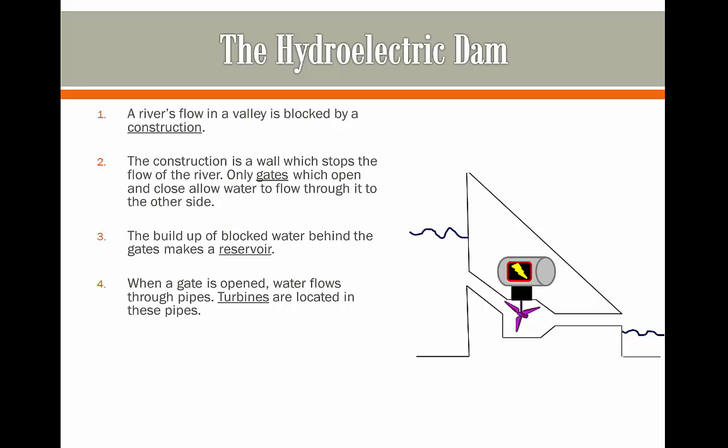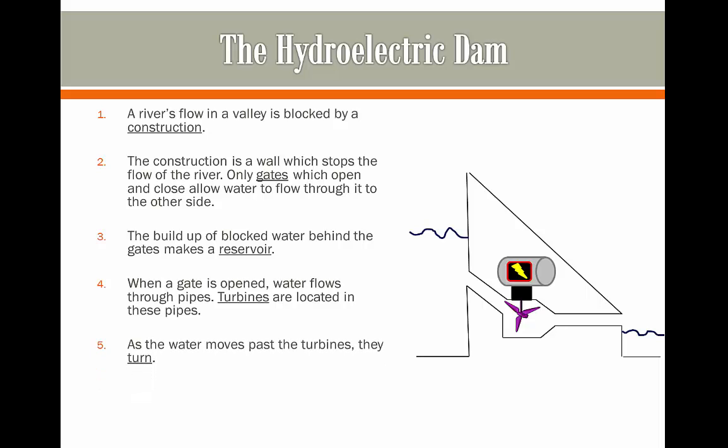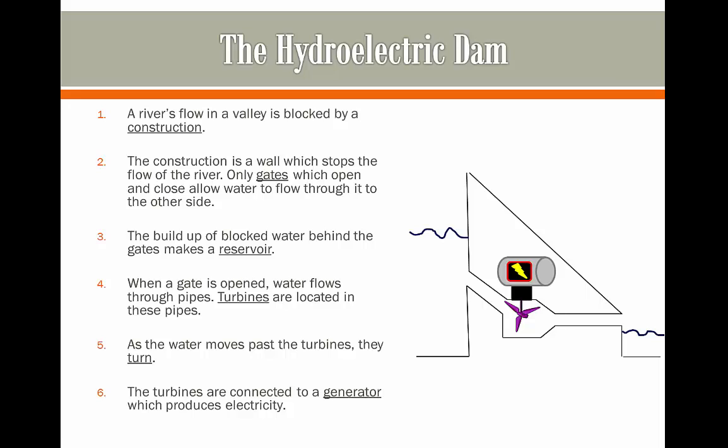When a gate is opened and allows the flow to go in, water flows through these pipes. Turbines are in the way of where the water is flowing and as a result turn as the water pushes them. These are then turned and when they do they are hooked up to a generator. When they turn, the generator produces electricity.